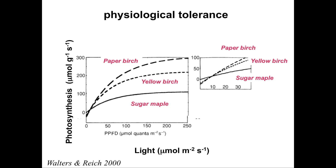Closer to home, here are some more local species. We can see that at high light levels, paper birch is going to have higher physiological rates than sugar maple. But when we get down into low light, sugar maple at very low light levels has an advantage over these two species.